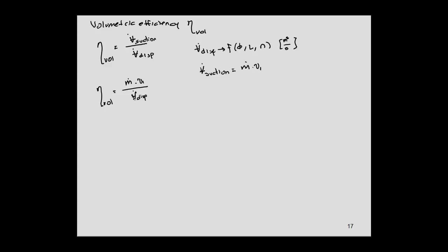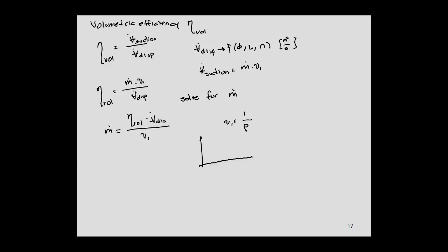Substituting, the volumetric efficiency equals mass flow rate times specific volume at the compressor inlet divided by the displacement rate. Solving for mass flow rate: mass flow rate equals volumetric efficiency times the displacement volumetric flow rate divided by the specific volume at the inlet — noting that specific volume is the inverse of density. Because of this, if we compute capacity versus evaporation temperature, we get a characteristic curve, which we'll work through in an example.